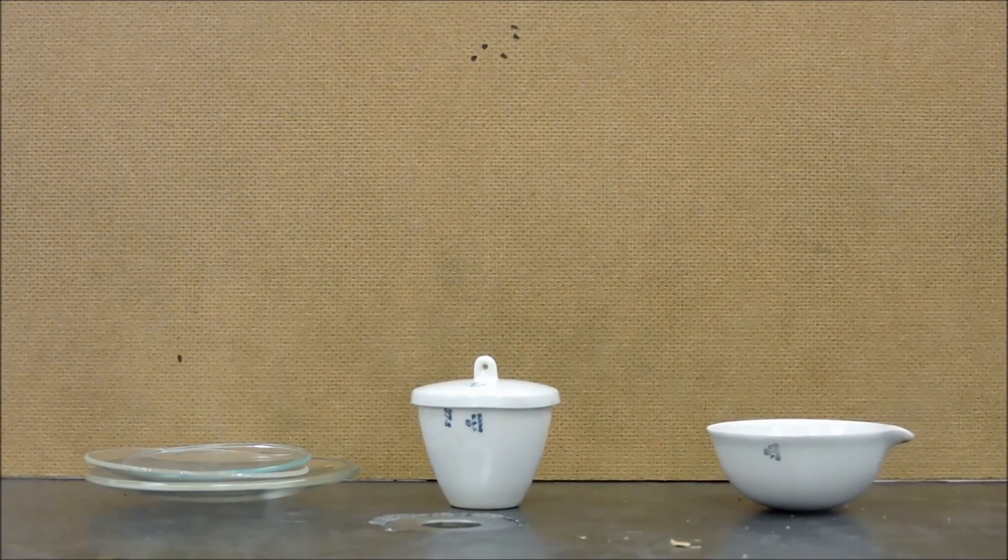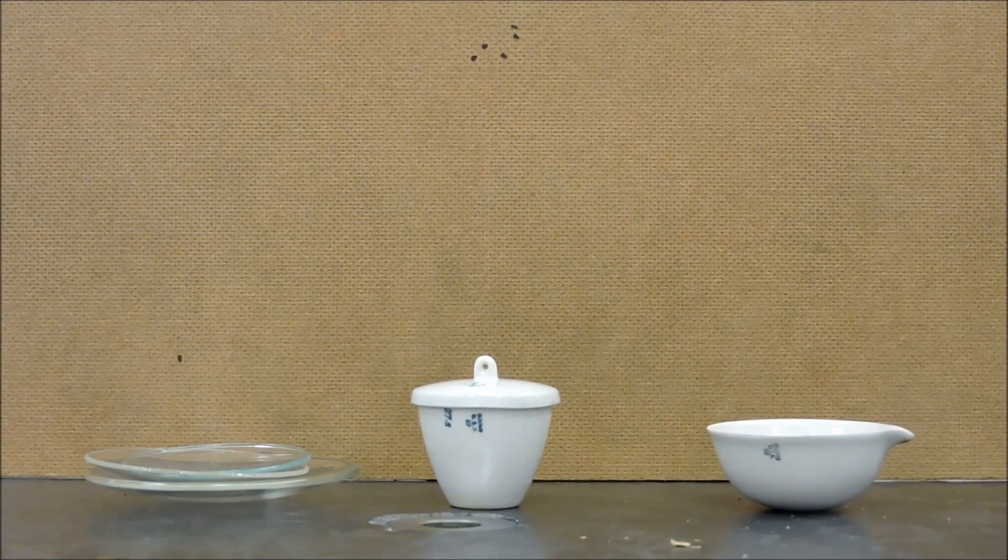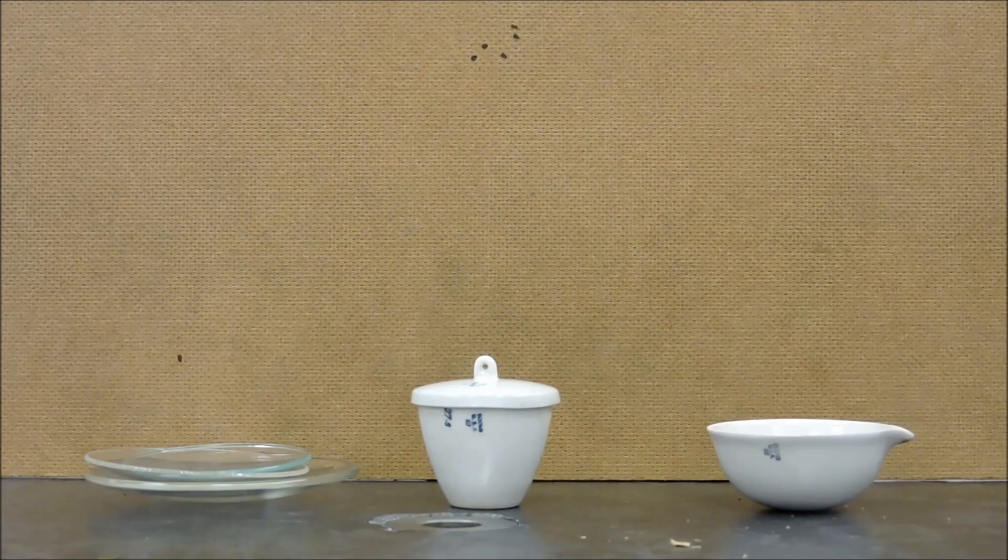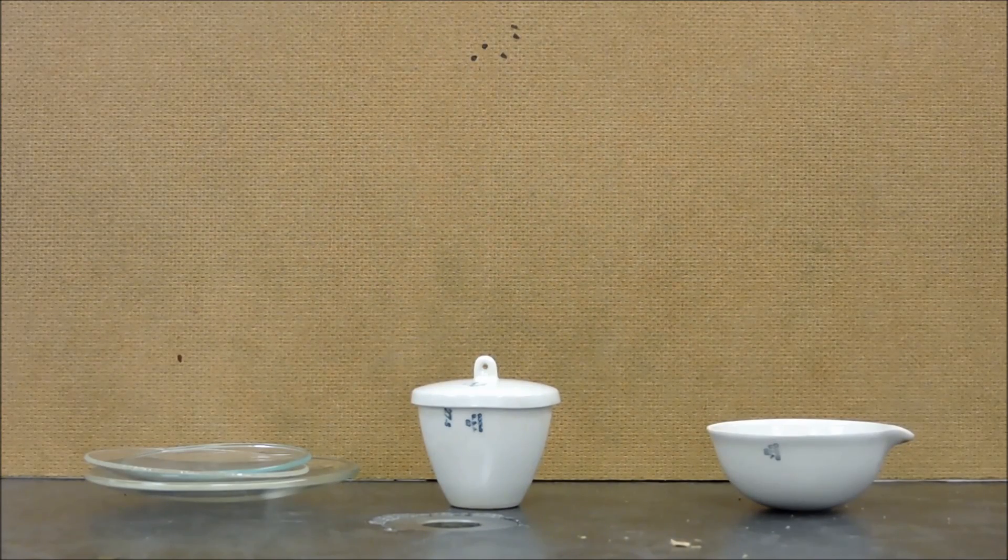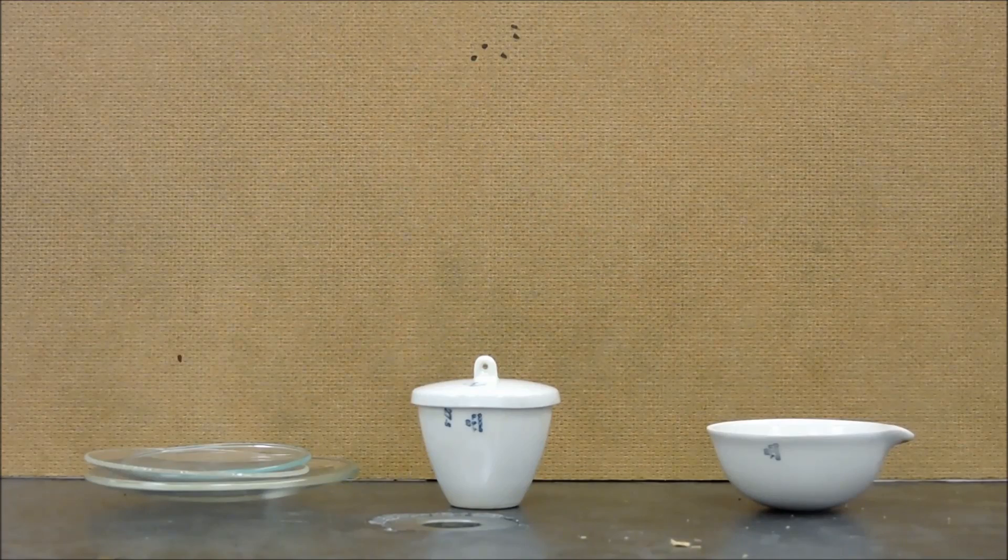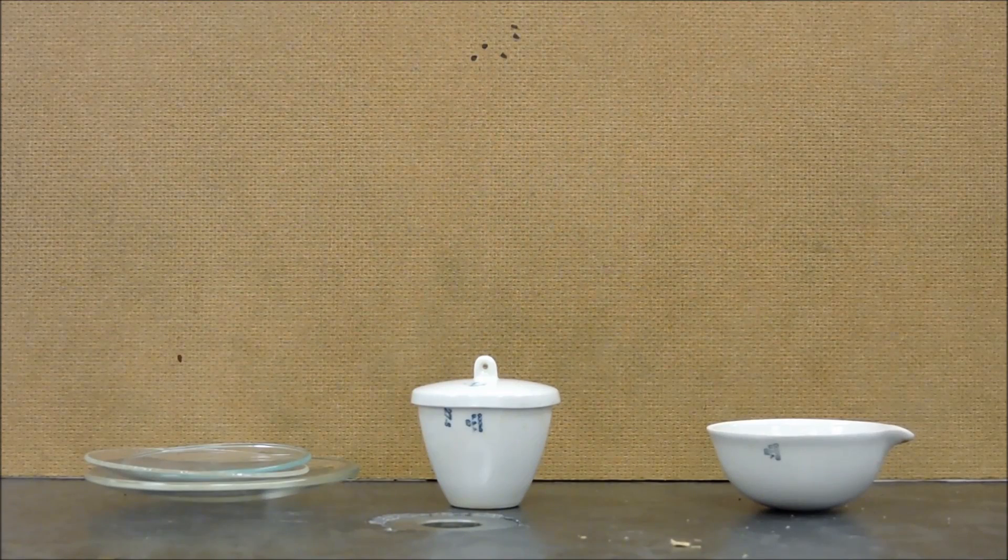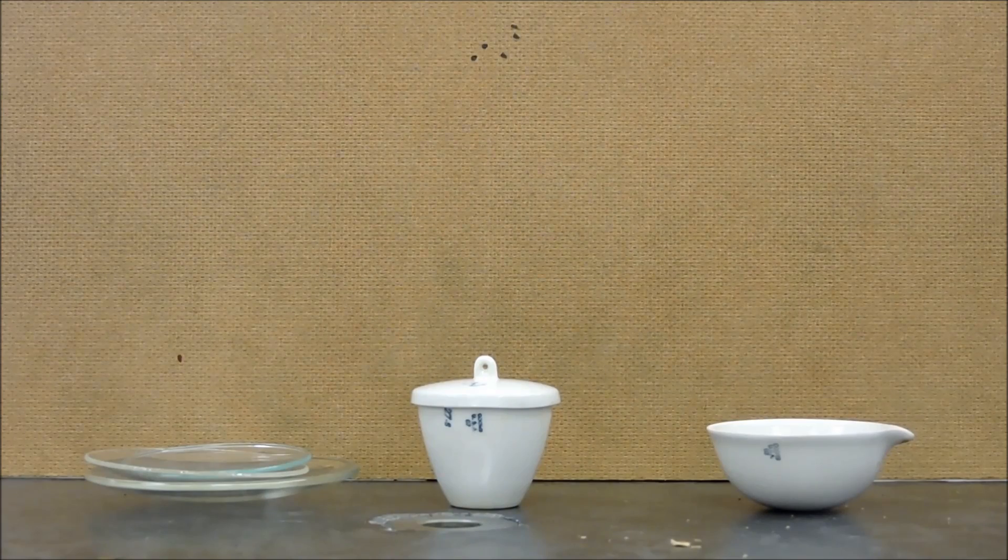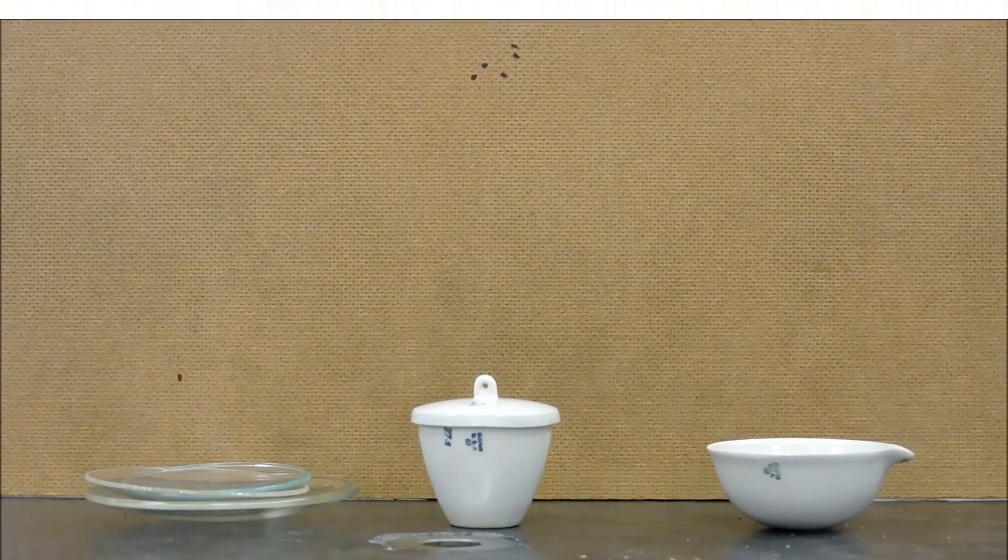The item to your left is a watch glass. It is used to observe substances. The item in the middle is a crucible and its lid. It is used to hold heated substances. You will use a crucible in the percent hydrate lab. The item to the right is an evaporating dish. It is used to observe evaporating substances.